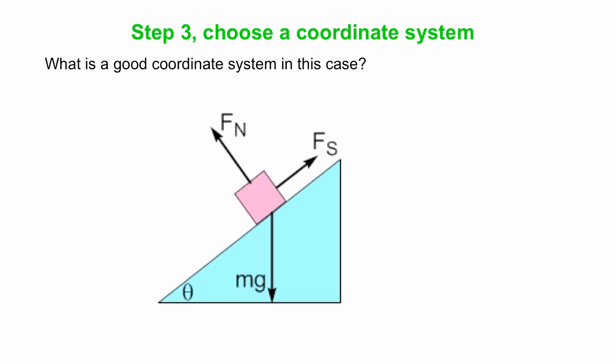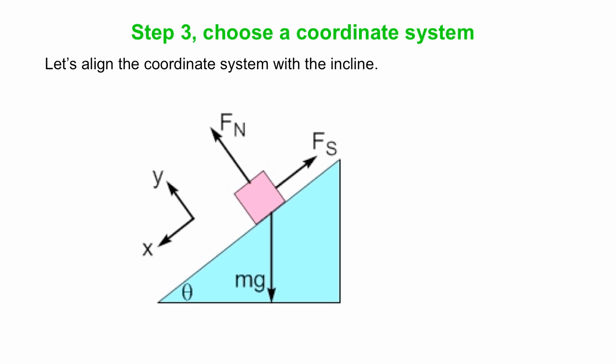So let's choose a good coordinate system. Turns out that any coordinate system would do, but some coordinate systems are easier to use than others. And a good one in this case is one that is aligned with the slope. This is often useful for boxes on ramps. It's convenient in this particular case because two of our three forces are aligned with the coordinate axis.